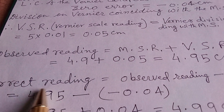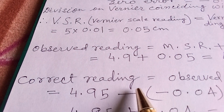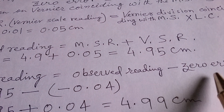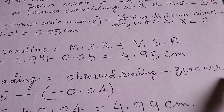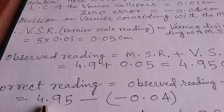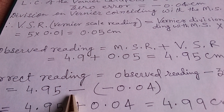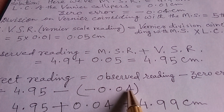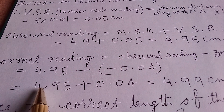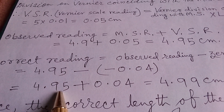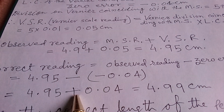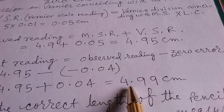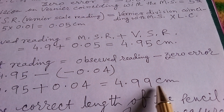The correct reading = observed reading − zero error. The observed reading is 4.95 cm and the zero error is −0.04 cm. So correct reading = 4.95 − (−0.04) = 4.95 + 0.04 = 4.99 cm.